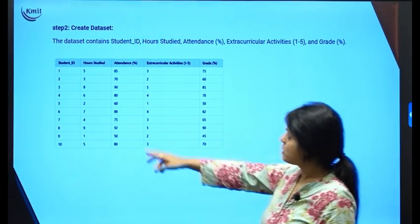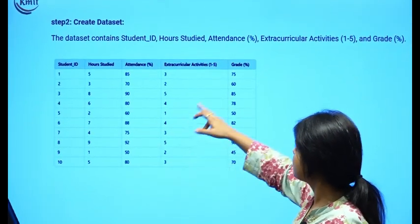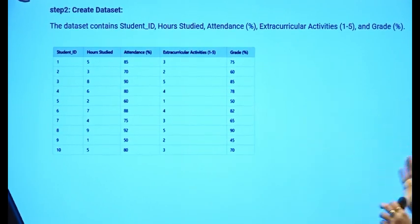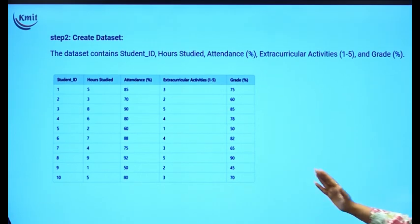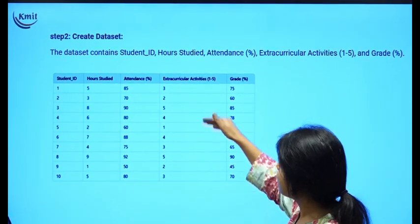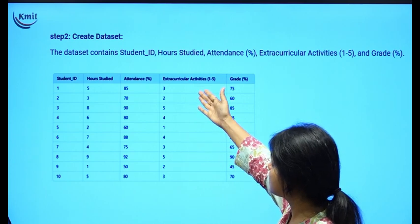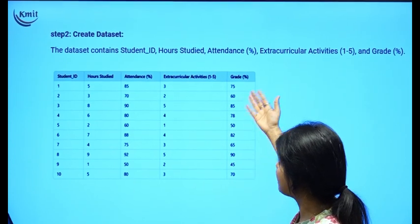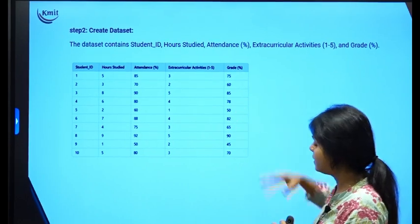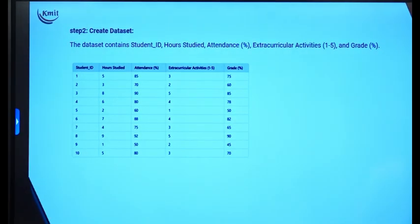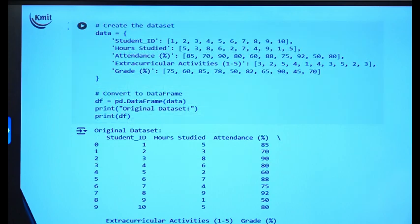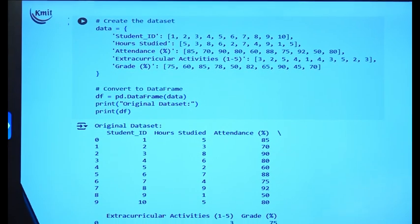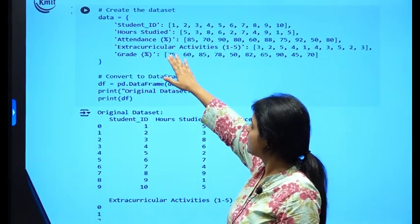The dataset contains hours studied, attendance, extracurricular activities, and grade. I want to check which parameters the grade is less dependent on — for example, extracurricular activities may not have much impact. We will look at the covariance relation between features to see which can be reduced for easier processing.